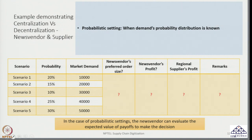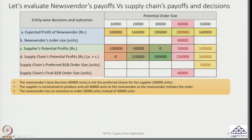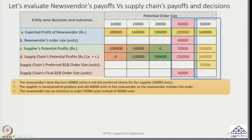Considering the expected value of payoffs, the potential order size chosen by the news vendor is 40,000 units, but that is not the preferred choice for the supplier or the entire supply chain. The supplier is constrained to produce whatever the news vendor orders since the news vendor initiates the order, and the news vendor has no incentive to order more. The better decision would be 50,000 units, but the news vendor has no incentive to consider this because the expected loss from ordering 50,000 units is 40,000 rupees.